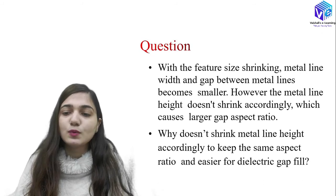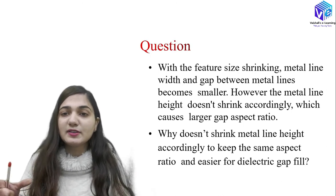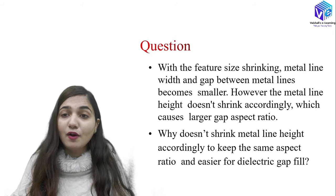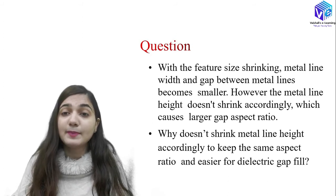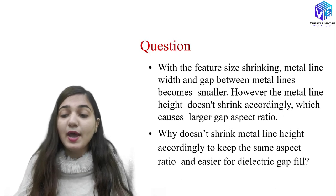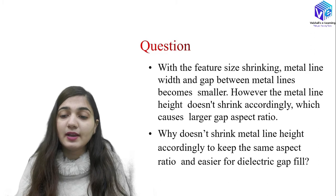The solution is high density plasma chemical vapor deposition, with the help of which I can simultaneously deposit and do the sputtering etch. This is a very big advantage of using HDP-CVD. Now, with feature size shrinking, the metal line width and the gap between the metal lines are becoming smaller, but the height is not reducing accordingly, which causes a larger gap aspect ratio.